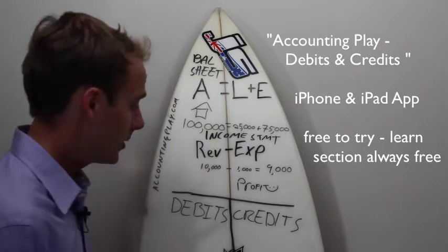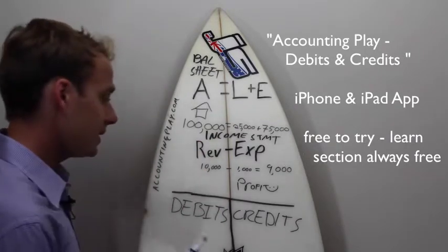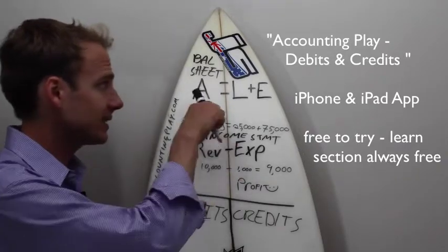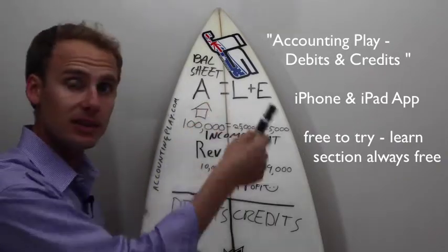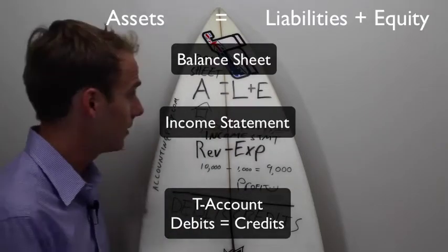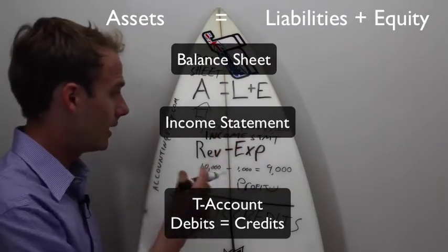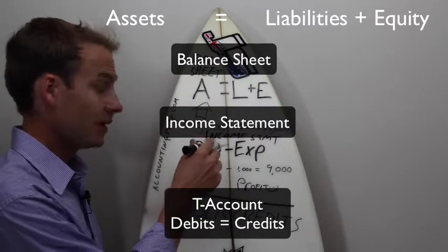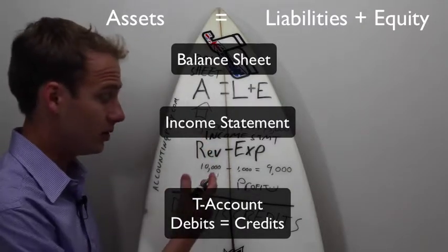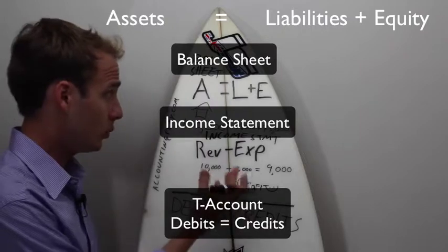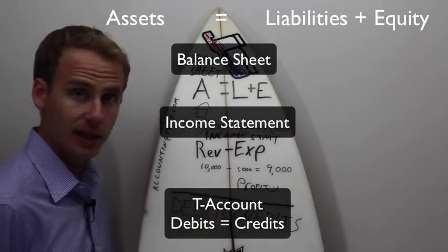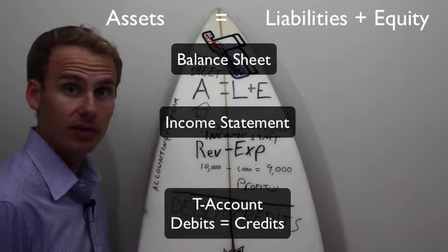That's a lot going on. Going back to the T-account, all we're trying to memorize this lesson is assets equals liabilities plus equity — got to memorize it. ALE. A lot of people like ALE. And revenue minus expense. We need a way to increase and decrease these things within the accounting framework.